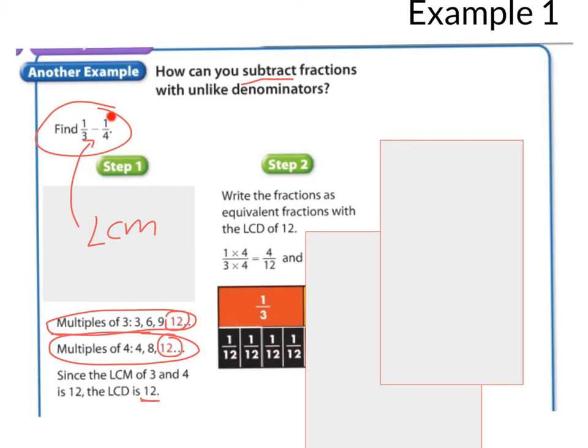And now, I want to think, what do we predict we're going to multiply one-fourth by so that 12 is also on the bottom? We're going to multiply that by three over three. So, four times three is 12. That's how I knew I'd multiply by three over three. One times three is three.